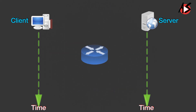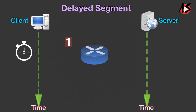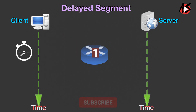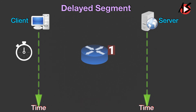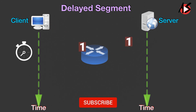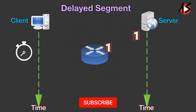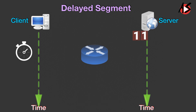Another possibility is a delayed segment due to the underlying IP network. The client TCP resends such segments when it times out. When the server TCP gets such packets with the same sequence number, they are discarded.